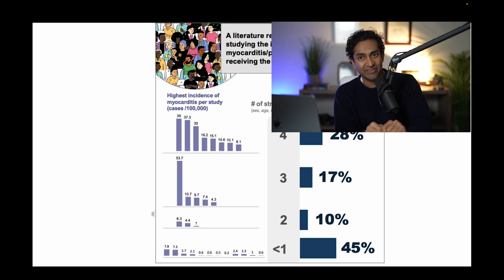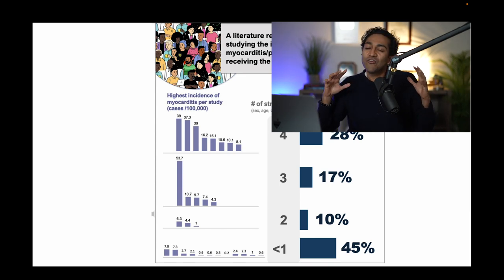You see that the highest incidence of myocarditis occurs in studies that break it out by more stratifiers. In other words, when you actually tell me about 16-year-old men separate from 87-year-old women, it looks a lot worse. Vaccine-induced myocarditis in 16-year-old men, particularly mRNA vaccination, particularly dose two, and particularly Moderna.